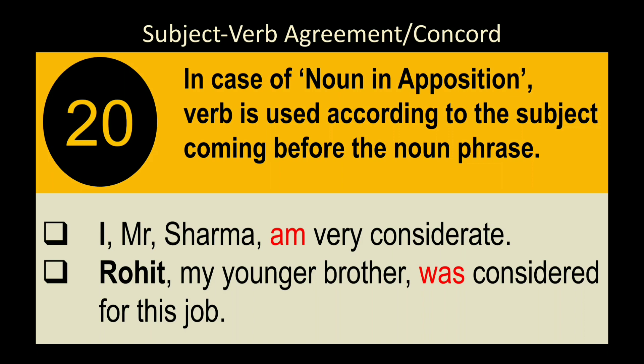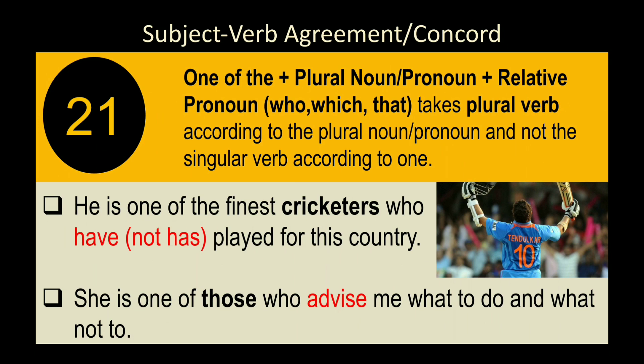Rule 22: In case of a noun in apposition — phrases that give more information about a noun — the verb agrees with the subject coming before the noun phrase. Examples: 'I, Mr. Sharma, am very considerate' — verb agrees with 'I,' so 'am.' 'Rohit, my younger brother, was considered for this job' — verb agrees with 'Rohit' (singular), so 'was.'